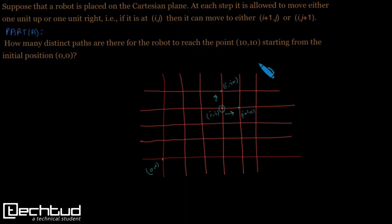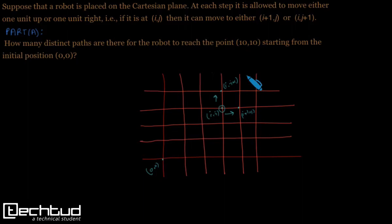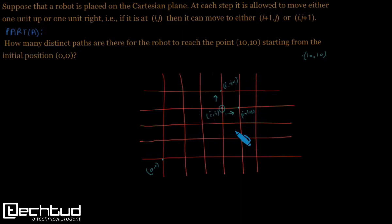This was the first part of the question. We have to find out the distinct paths to reach point 10,10 from origin 0,0. At every node we have two choices: either go up or go right.